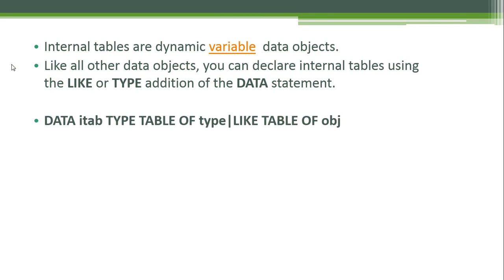For example, you write DATA, the name of your internal table — in this case 'item' — TYPE TABLE OF, and then you specify a type. Or you can use LIKE TABLE OF, and in this case you specify an object or another table.